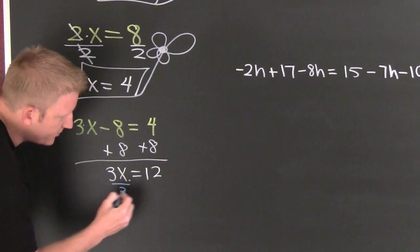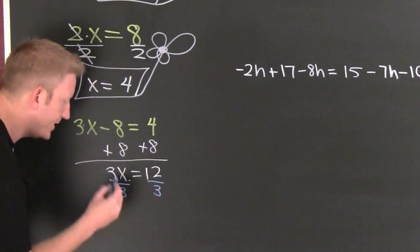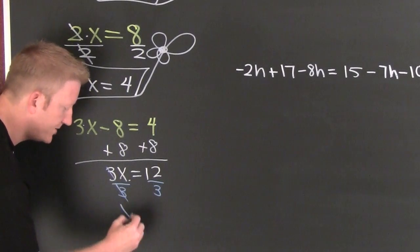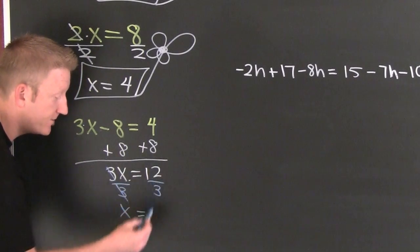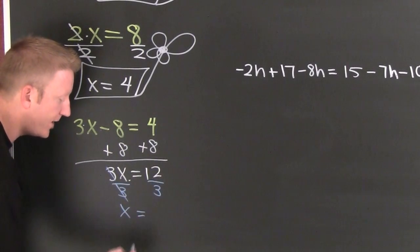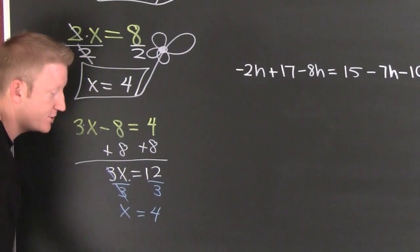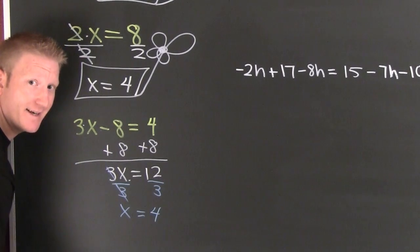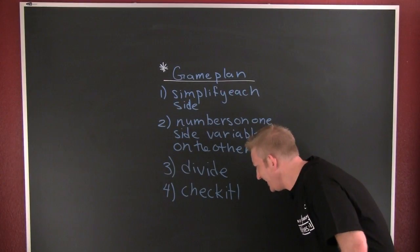Divide this side by 3, divide that side by 3. And you're left with x, and on the right it's 4. I'm starting to think that all the answers are 4. Check it — 4.